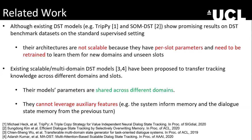There are some scalable multi-domain DST models that transfer tracking knowledge across different domains and slots, generalizing to domain-slot pairs not in the training data by sharing model parameters. However, they cannot leverage auxiliary features such as the system-informed memory and the dialogue-state memory from previous turns. Our proposed model not only has shared parameters across different domains, but also leverages these auxiliary features to more accurately capture system recommendations and better track dialogue-state information from previous turns.